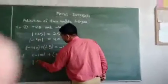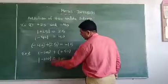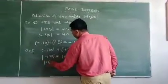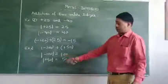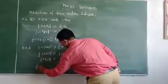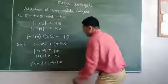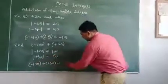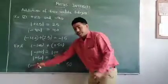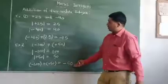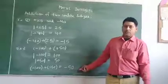We have to find the absolute value: the absolute value of minus 100 is 100 and the absolute value of plus 50 is also 50. We have to add minus 100 and plus 50. We subtract the smaller from the greater: 100 minus 50 equals 50. We prefix the sign of the greater number — the greater number is 100, so the sign is minus. The result is minus 50. I hope you are satisfied with our explanation. Practice a lot. Thank you, students.